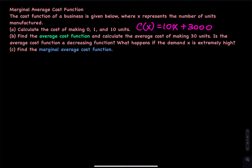This application problem is about the cost function, average cost function, and marginal average cost function. The cost function of a business is given below, where x represents the number of units manufactured. Our cost function is c(x) = 10x + 3000.